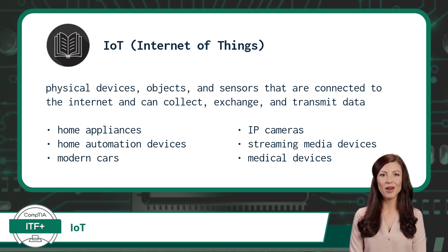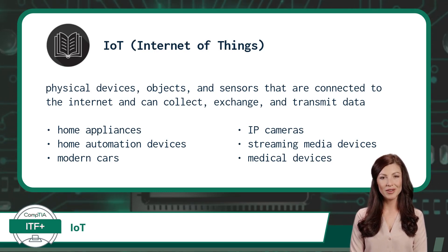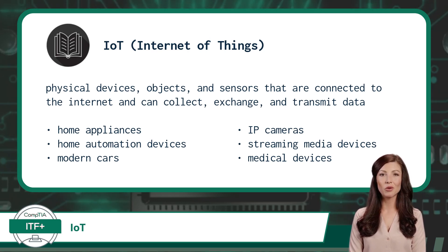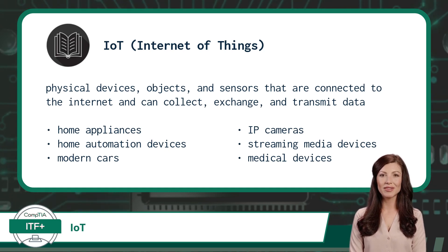These things are physical devices, objects, and sensors that are connected to the internet and can collect, exchange, and transmit data. These devices, which can range from everyday household objects to industrial machinery, come with sensors, embedded operating systems, and network connectivity to enable communication and data sharing. The Internet of Things allows these devices to interact with each other, as well as with humans, to gather and analyze data, automate processes, and enable remote monitoring and control.